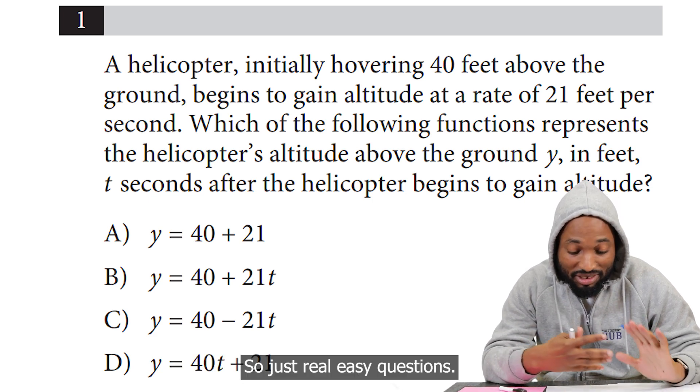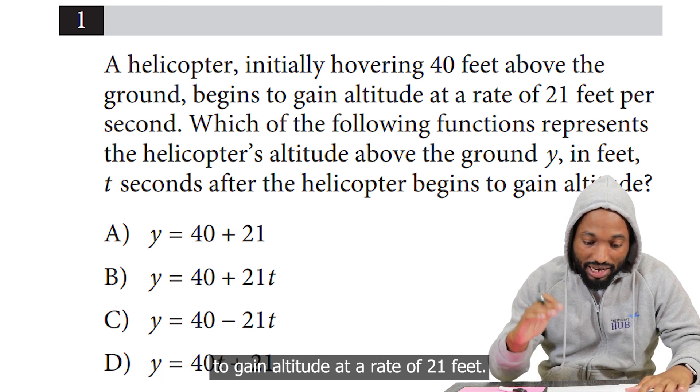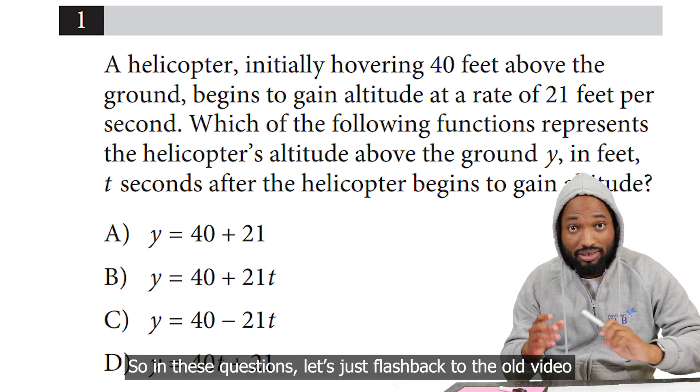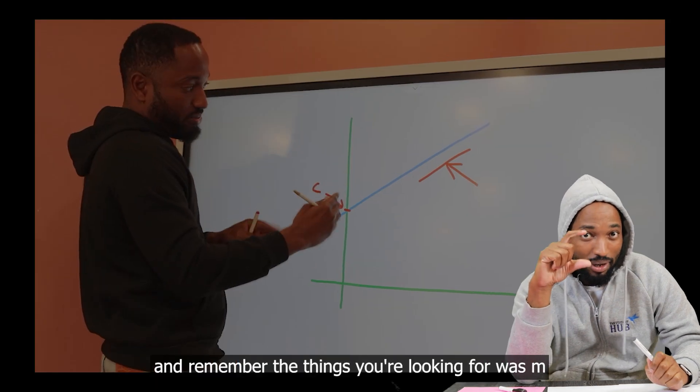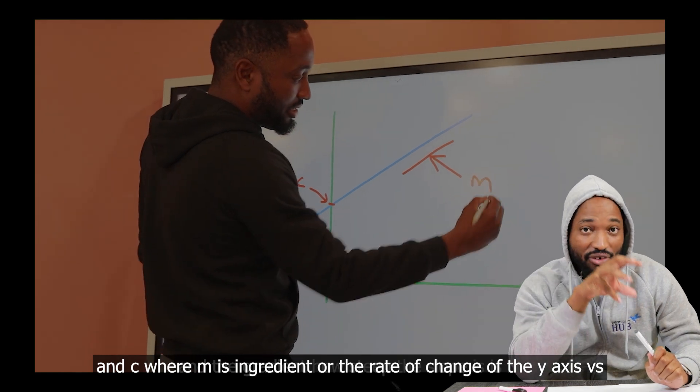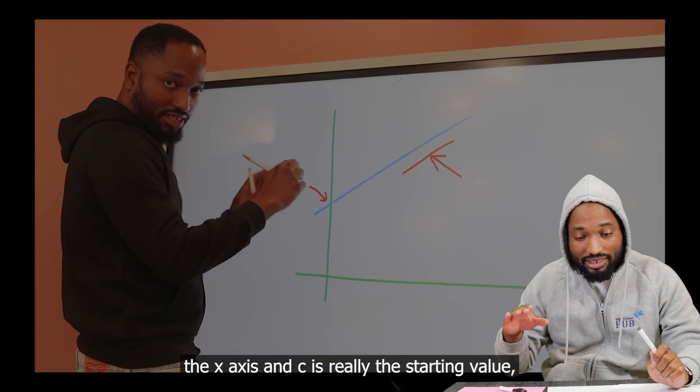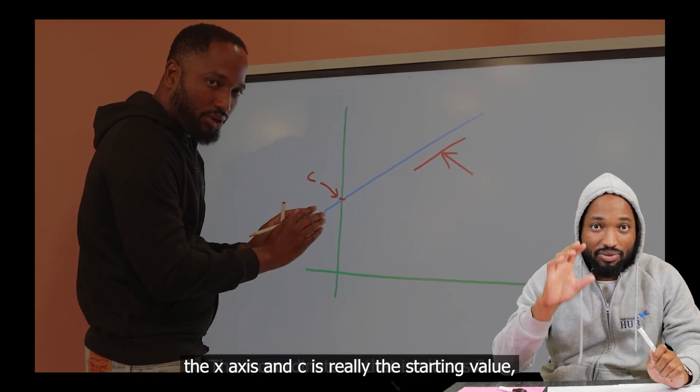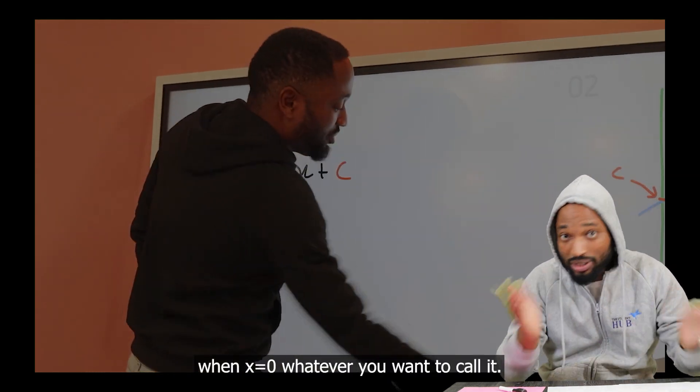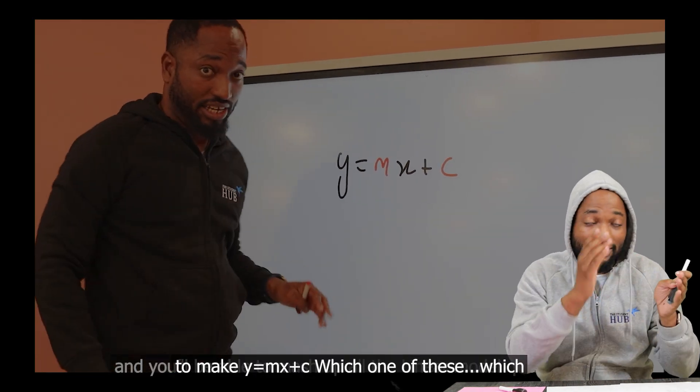Watch it: initially hovering 40 feet above the ground, begins to gain altitude at a rate of 21 feet. So in these questions, let me just flashback to the old video and remember the things you're looking for was m and c, where m is the gradient or the rate of change of the y-axis versus the x-axis, and c is really the starting value, the initial value, where it's cutting the y-axis when x is zero. So we're just really trying to find m and c to make y equals mx plus c.